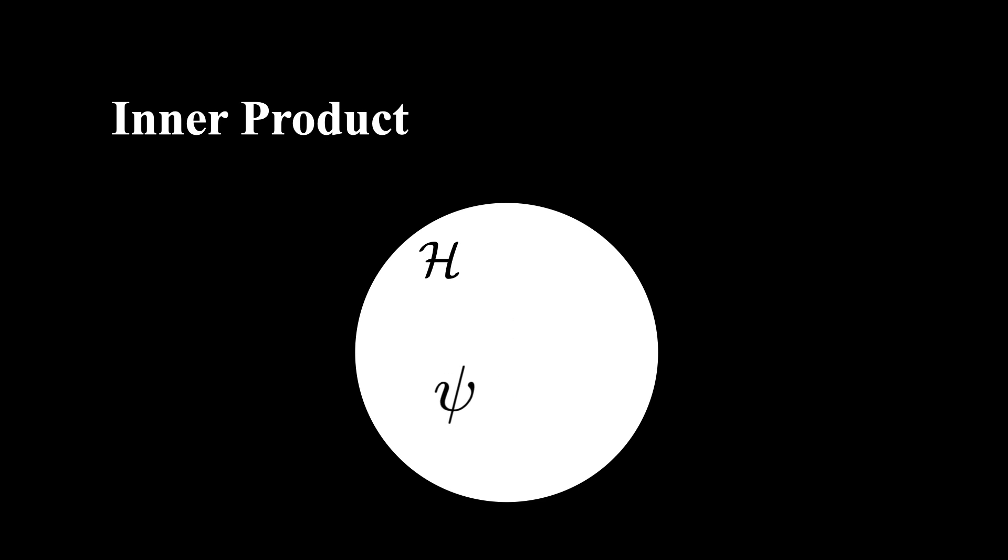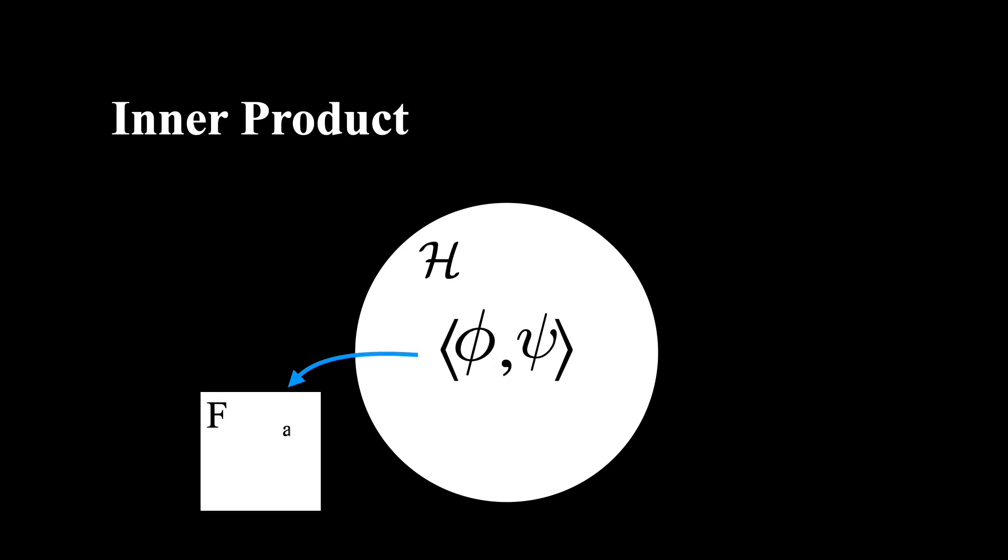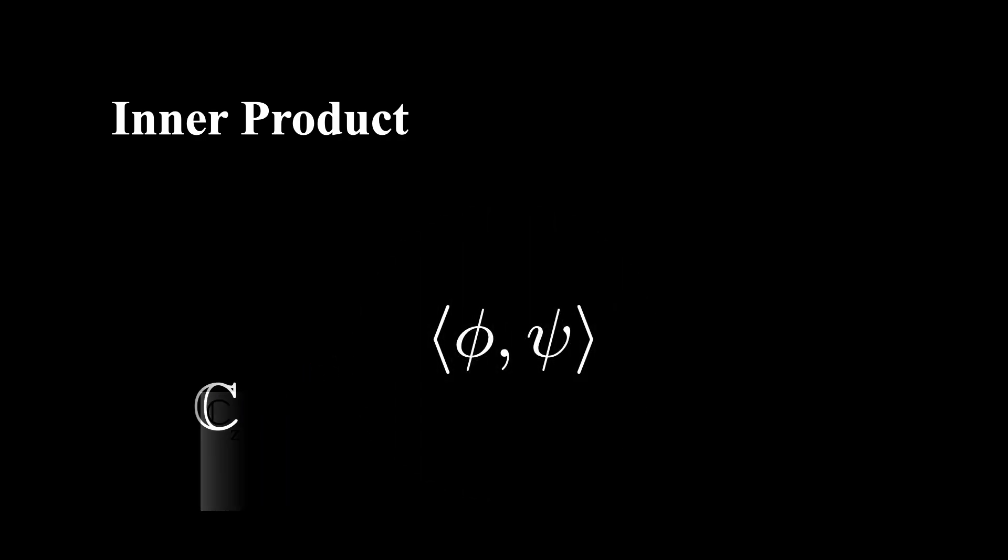Now let's pick any two functions that live in this Hilbert space. We'll call them psi and phi. The inner product is then a map that takes these two functions and associates them to a scalar in the field that underlies the Hilbert space. In almost every circumstance in quantum mechanics, the underlying field will be complex. So the scalar that the inner product maps to will be a complex number.